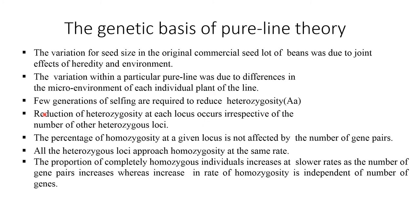A few generations of self-fertilization are required to reduce heterozygosity. Reduction of heterozygosity at each locus occurs irrespective of the number of heterozygous loci. The percentage of homozygosity at a given locus is not affected by the number of gene pairs. All heterozygous loci approach homozygosity at the same rate. The proportion of completely homozygous individuals increases at a slower rate as the number of gene pairs increases, whereas the increase in rate of homozygosity is independent of the number of genes.